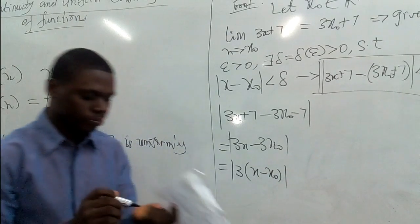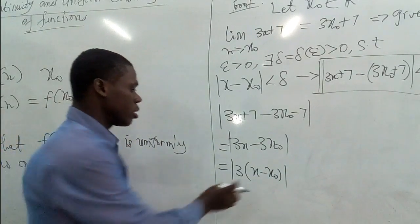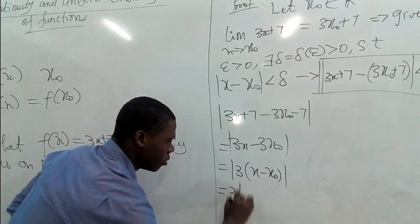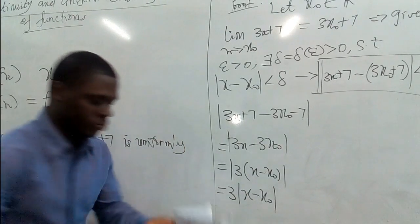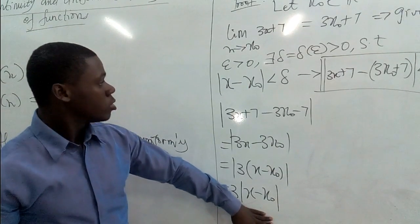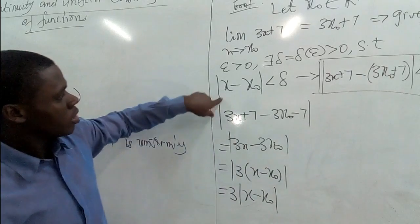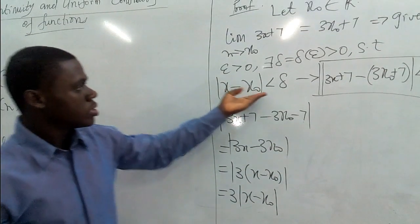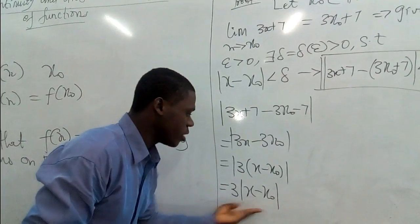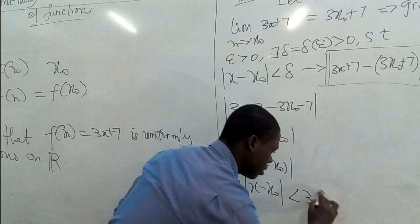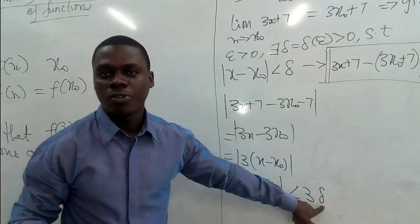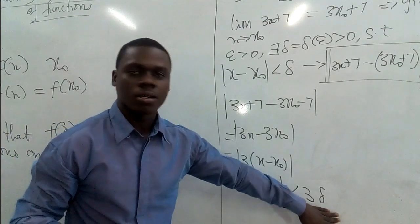Alright, so we have this. So the 3 is already positive, so we can bring it out of the absolute value symbol. And now it gives us 3|x - x₀|. When we reach here, then we begin to smile, because what we are after, we have actually arrived at it. So we have |x - x₀| less than delta. That means that introducing delta here means whatever we have here is going to be less than 3δ. Good. We need to select a value for delta that will lead us to epsilon.